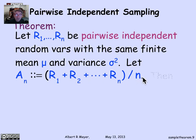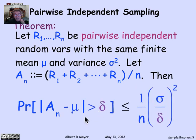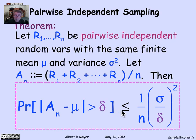...then the probability that the average differs from the mean by more than delta is less than or equal to this definite number that we derived, 1 over n times sigma over delta squared.